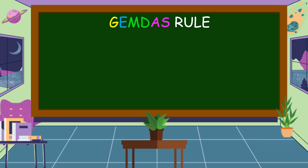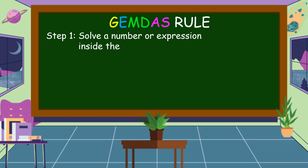So, how do we evaluate an expression using the GYMDAS rule? Step 1: Solve a number or expression inside the grouping symbol. These are the grouping symbols — we have parenthesis, brace, and bracket.